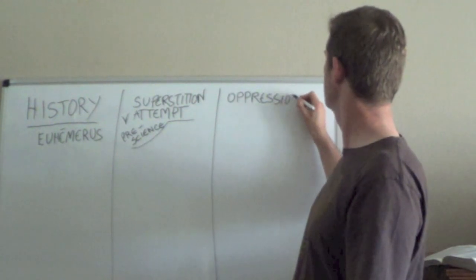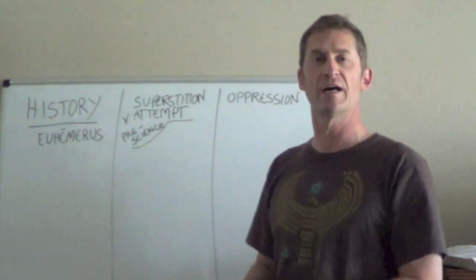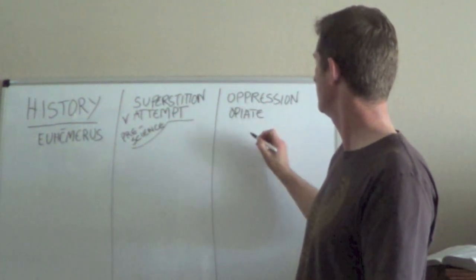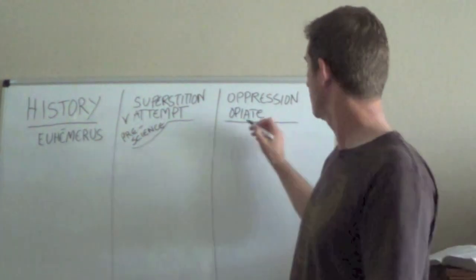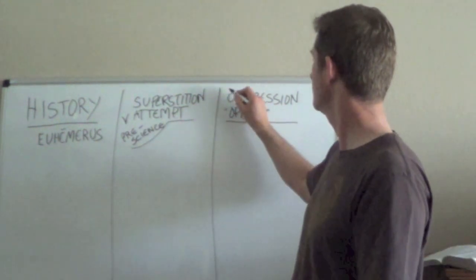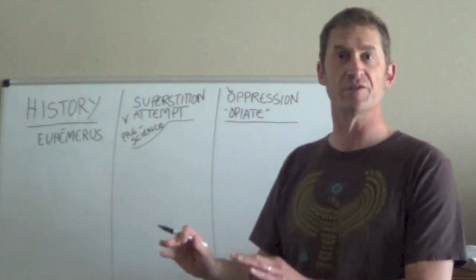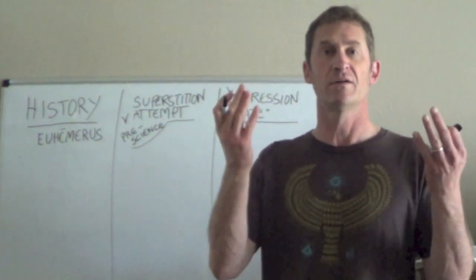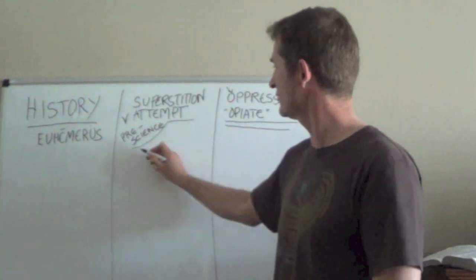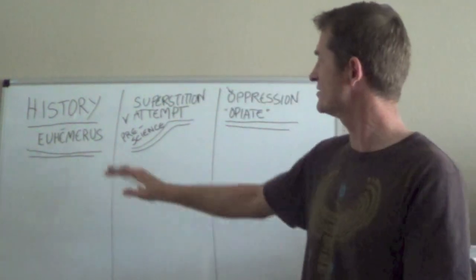It's a patronizing way of looking at the ancient myths as if those ancient people just didn't know, so they had to make something up. Then there's another category which says the ancient myths are actually part of a form of oppression, a way of keeping people in line. It's a way of the kings telling other people we are descended from the gods and you are not, so you have to do whatever we say. It's the opiate, the early form of the opiate of the people.